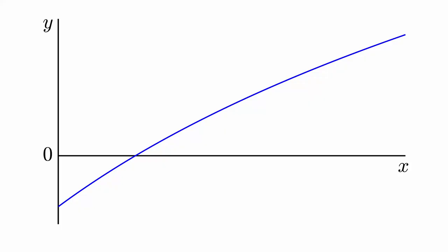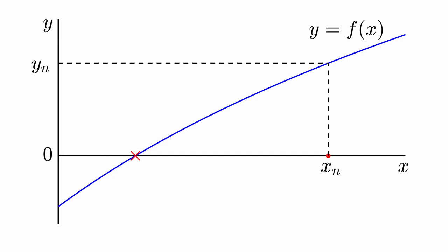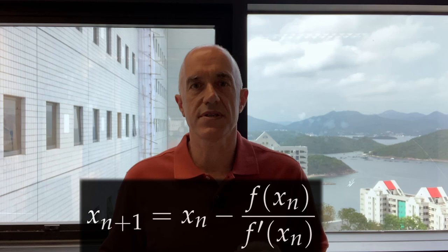We start with some general function y equals f of x. Here is the root of the function, where f of x equals 0. Suppose we are at the nth iteration of Newton's method with the value xₙ. To find the n plus first iteration, we approximate the function at xₙ by its tangent line. The intersection of the tangent line with the x-axis gives us the value xₙ₊₁. The derivative of f of x gives us the slope of the tangent line, and the point-slope formula gives us an equation for the line. We can then derive the iteration formula for Newton's method: xₙ₊₁ equals xₙ minus f(xₙ) divided by f′(xₙ).